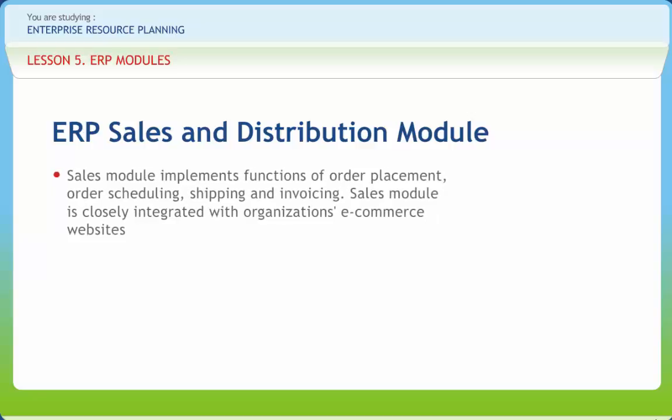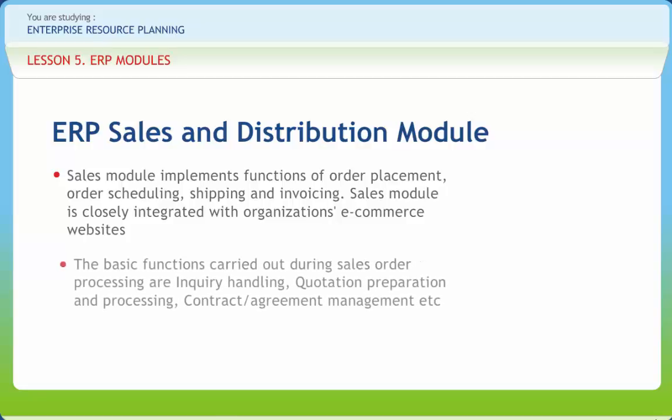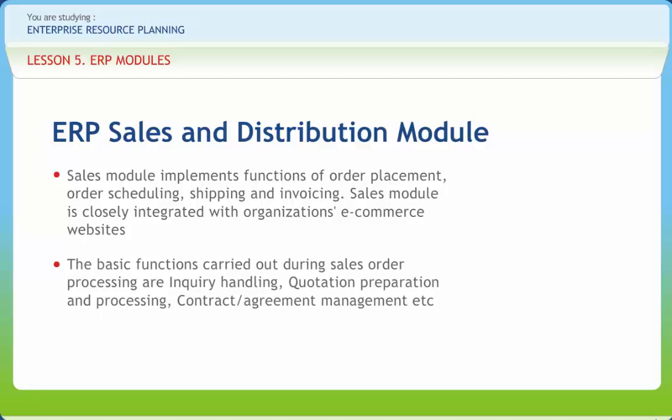The Sales module implements functions of order placement, order scheduling, shipping, and invoicing. It is closely integrated with organizations' e-commerce websites; many ERP vendors offer an online storefront as part of the sales module. Sales queries, sales orders, contracts and scheduling agreements, and invoicing or billing after-sales support are key sales-related business transactions. Basic functions during sales order processing include inquiry handling, quotation preparation and processing, contract or agreement management, checking availability, requirements transference to material planning, scheduling the shipping, pricing and taxes calculation, credit control, accounts receivable, and printing documents.